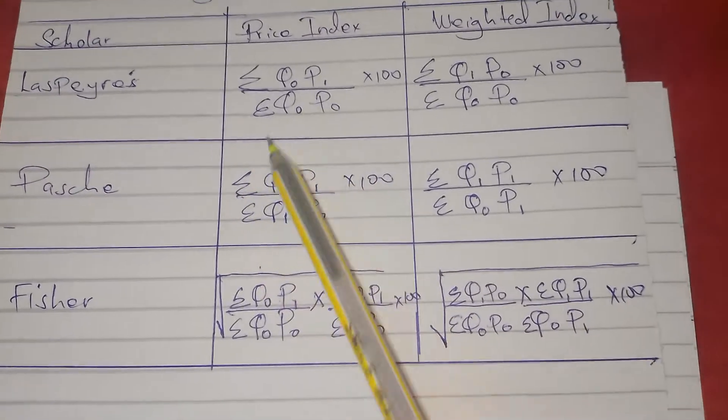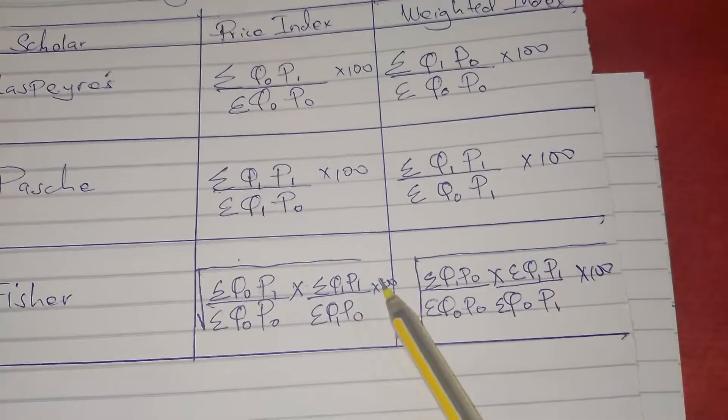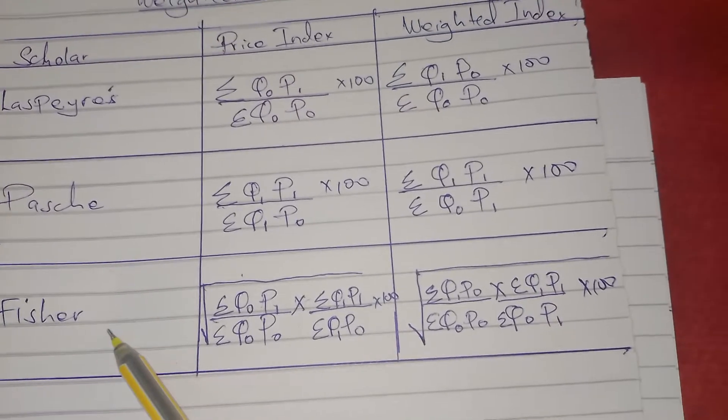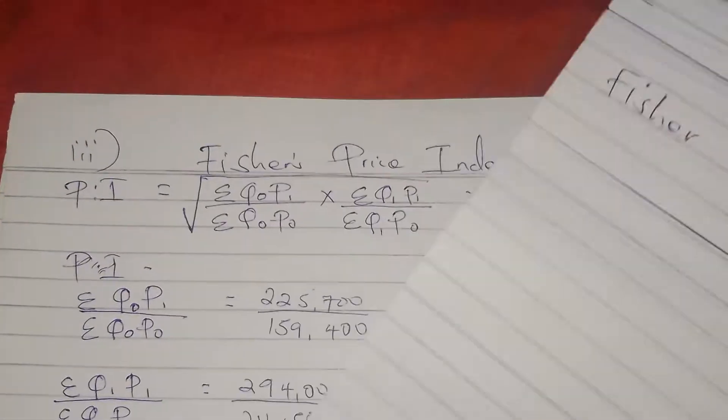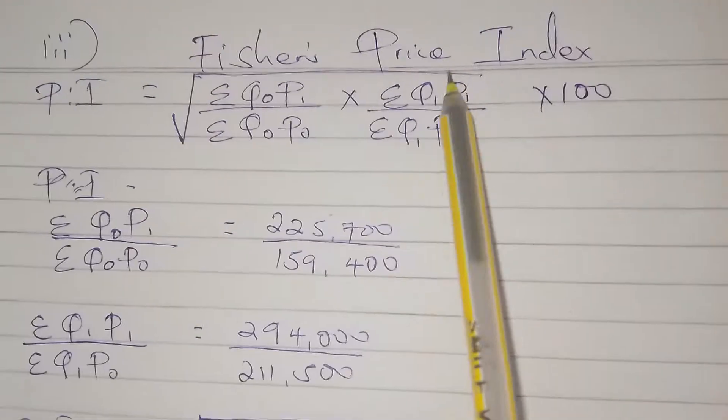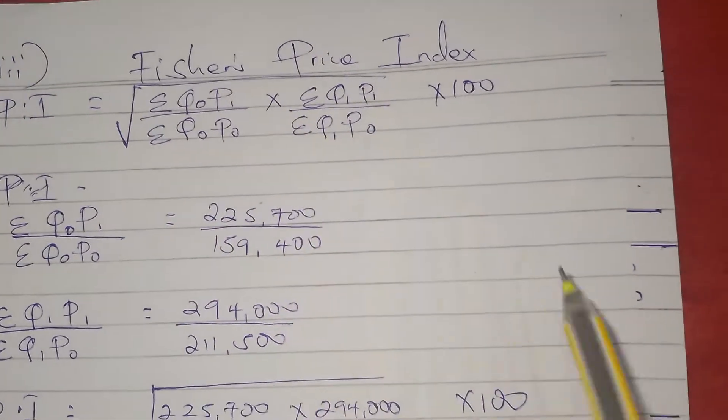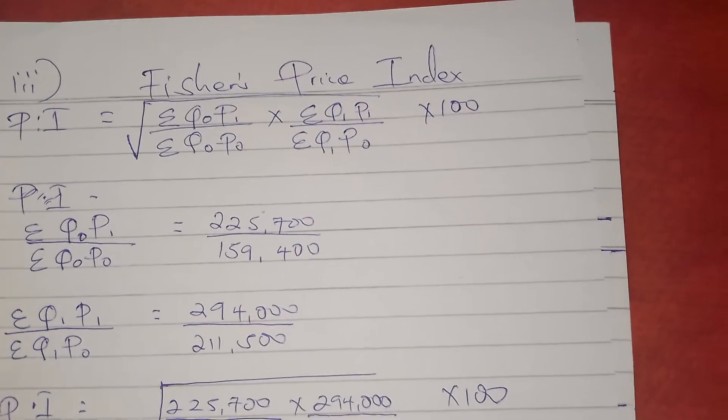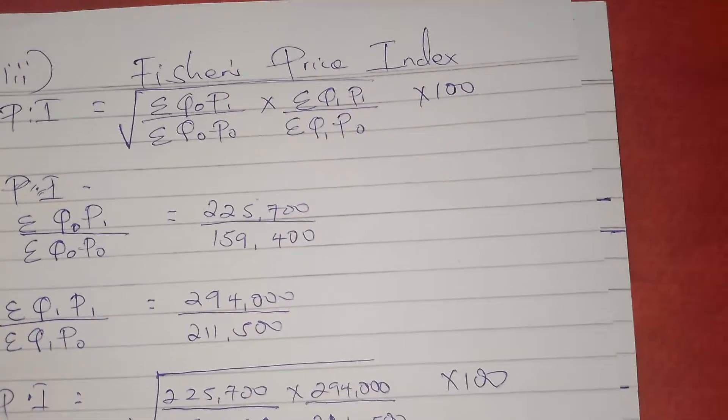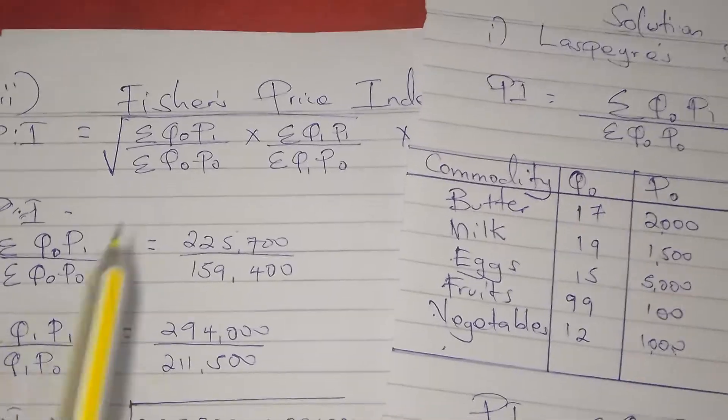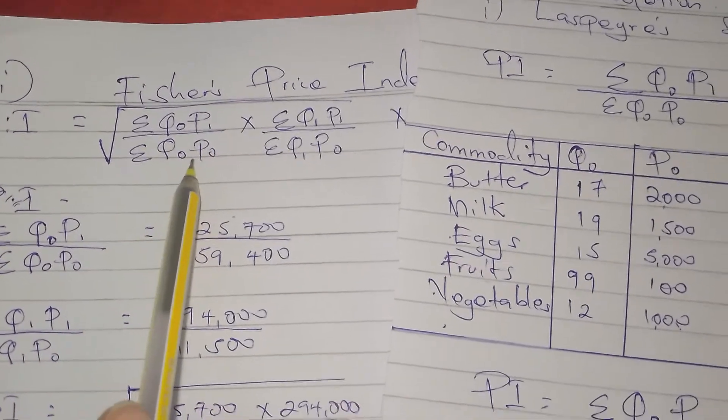We get it, we put it here, we get this one, we put it here, then we multiply with 100, we get Fisher's price index. So this is the formula we've seen how we get it. We simply get the figures from Laspeyres price index and Paasche's price index. According to Laspeyres price index, summation q₀p₁ over summation q₀p₀, we already had them.